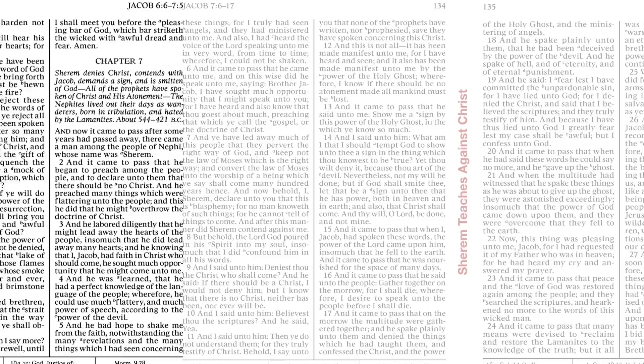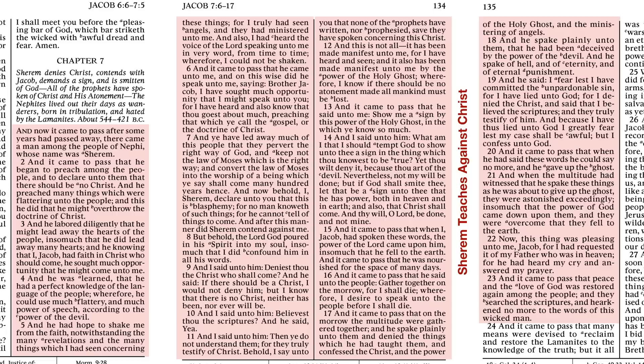On to Chapter 7. To me, it feels like Jacob opened the book again and said, you know what, I should really record this. Since last I wrote, it came to pass that some years had passed away and there's a guy named Sherem. Now, there's a possibility here that when the family of Lehi arrived in the Americas, there were already people there, and there's a possibility that Sherem may have been part of an indigenous population that had been looking for a long time to speak with Jacob. It could also be that he was one of the people there, but there are some things to think about.